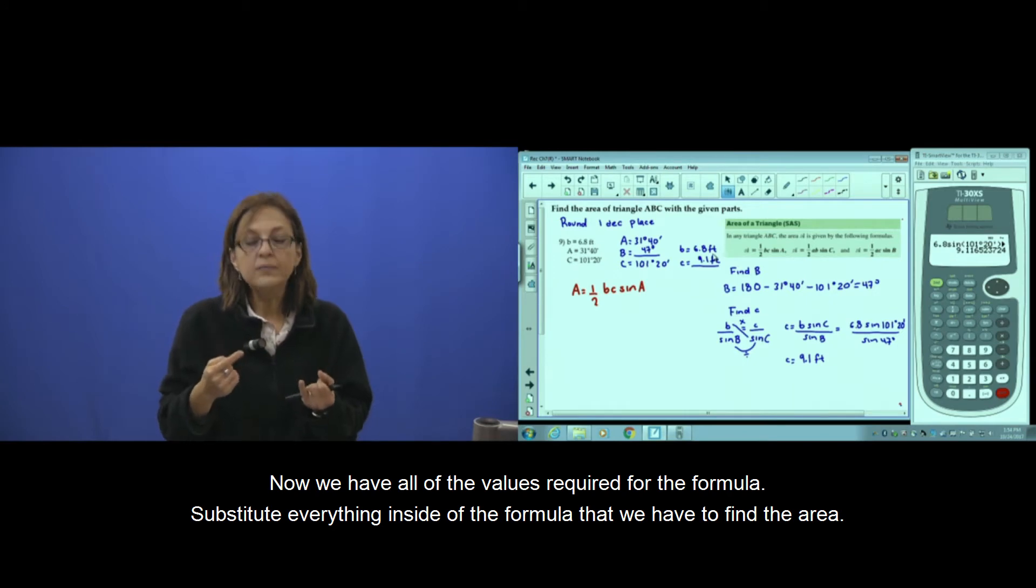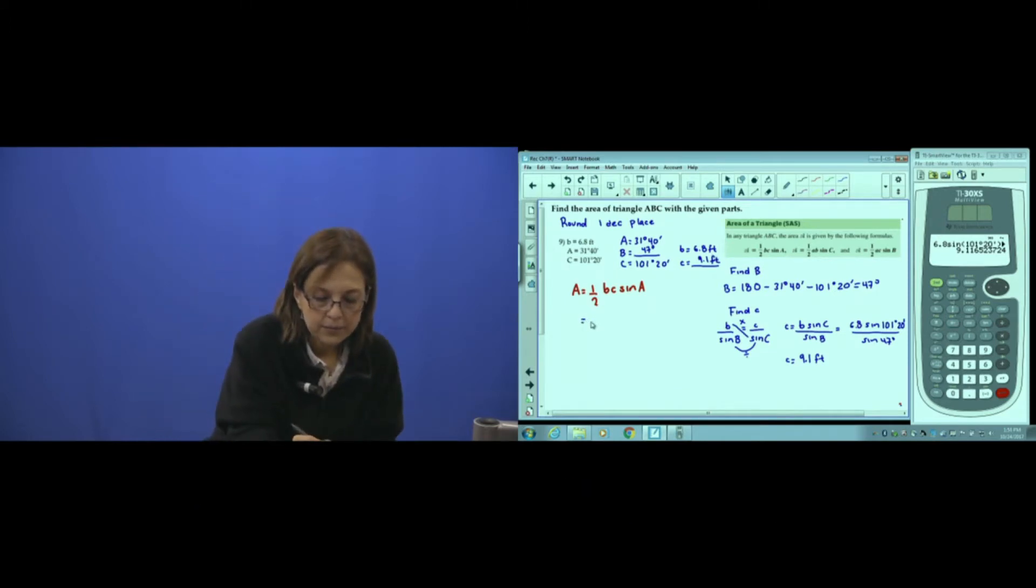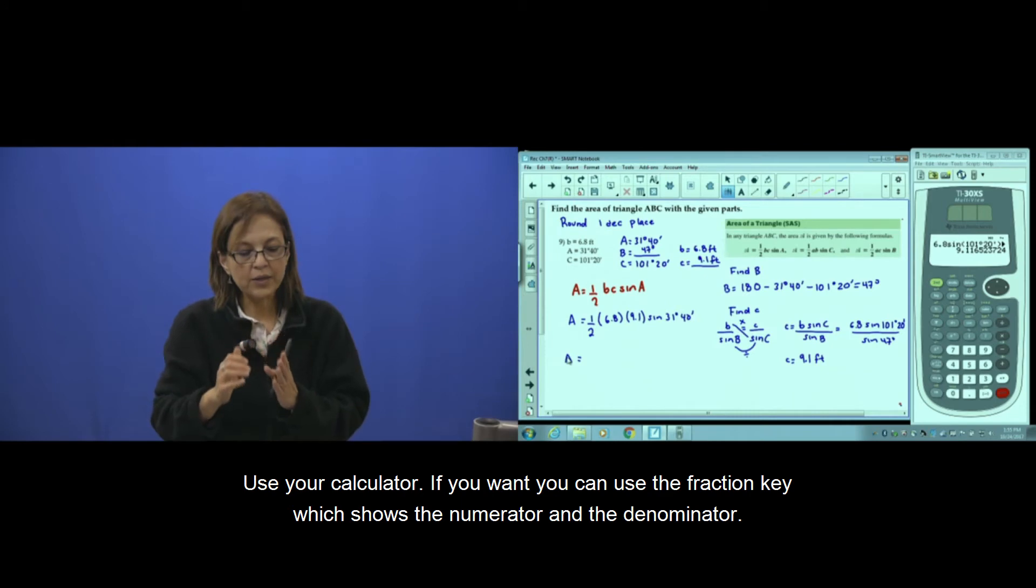Now we have all the values required for the formula. Substitute everything inside the formula. Then we have for area—use your calculator. If you want, you can use the fraction key, which shows the numerator and the denominator.